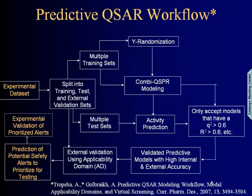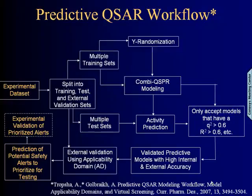It's a fairly sophisticated and compute-intensive exercise. Over the years we've developed protocols to build models that are validated and externally predictive. We start from an experimental dataset where we know both chemical structure and measured biological property of compounds, and via data processing and model validation exercises, we end up being able to predict potential safety alerts, prioritize them for testing, and experimentally validate models by demonstrating that compounds predicted toxic are indeed toxic, and those predicted non-toxic are indeed non-toxic.